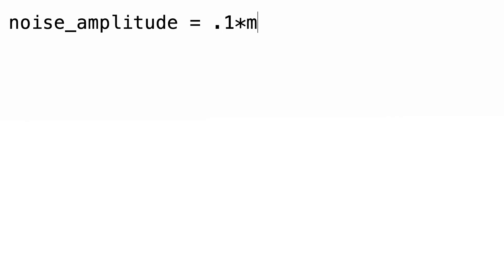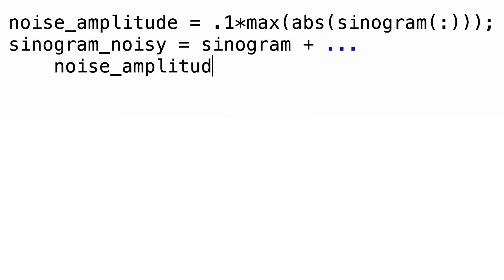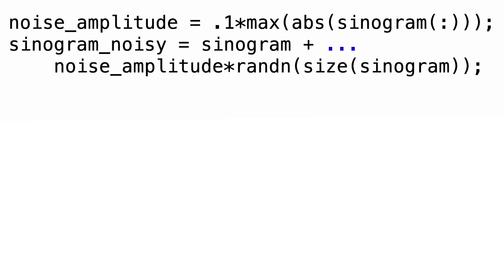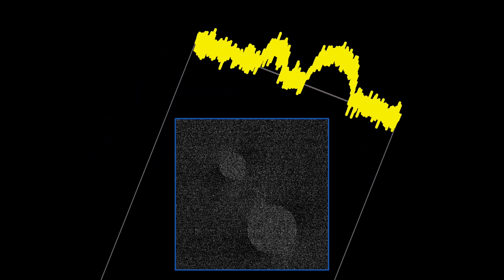We got a pretty much perfect reconstruction result with filtered back-projection. But in practical measurements the data will be noisy. We can simulate that by adding random numbers to the sinogram. The quality of the sinogram is now much worse than before. What happens when we reconstruct from such noisy data? We get a quite noisy result, which is not surprising.